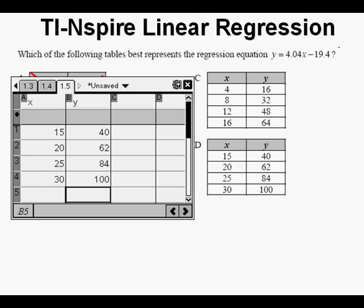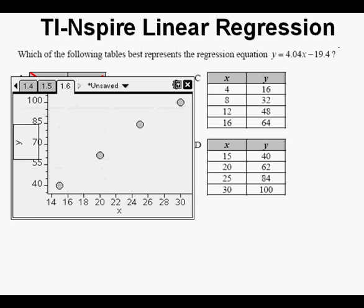Here are the data from answer d entered in the spreadsheet 1.5. And here is the scatter plot of these data on page 1.6. And here is the linear regression of the data, y equals 4.04x minus 19.4, which confirms answer d as the correct choice.